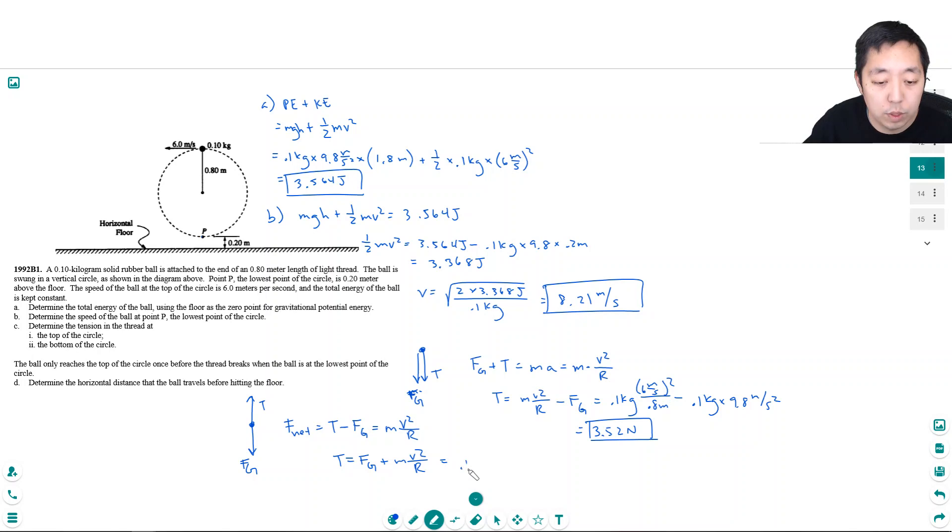That's equal to 0.1 times 9.8 plus 0.1 kilograms times its velocity at the bottom here which was 8.21 meters per second divided by 0.8 meters. Okay so 0.1 times 9.8 plus 0.1 times 8.21 squared divided by 0.8. 9.41 newtons.